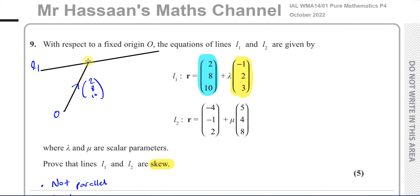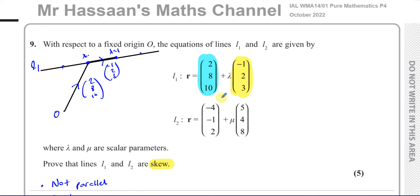Depending on the value of lambda, you end up at different points along the line. If lambda equals 0, you get the point (2, 8, 10). If lambda equals 1, you add one times the direction vector; lambda equals 2, two times that vector, and so on. So the vector equation takes you along the line, and where you are depends on lambda. It's made up of a point on the line and the direction of the line.